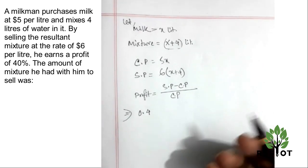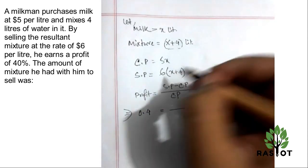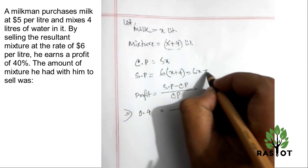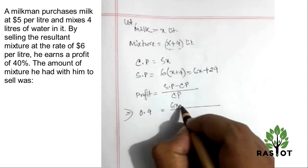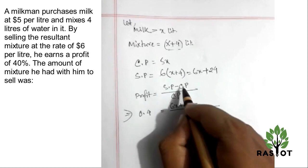The profit is 40 percent, meaning 0.4. Selling price is 6(x+4), so 6x plus 24, minus cost price which is 5x, divided by cost price again 5x.